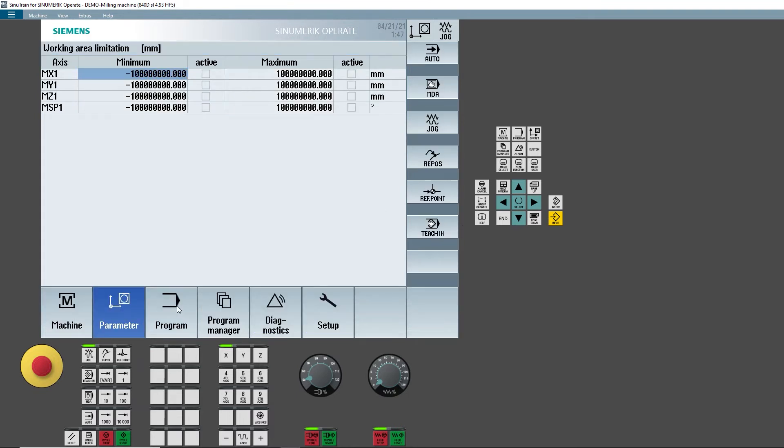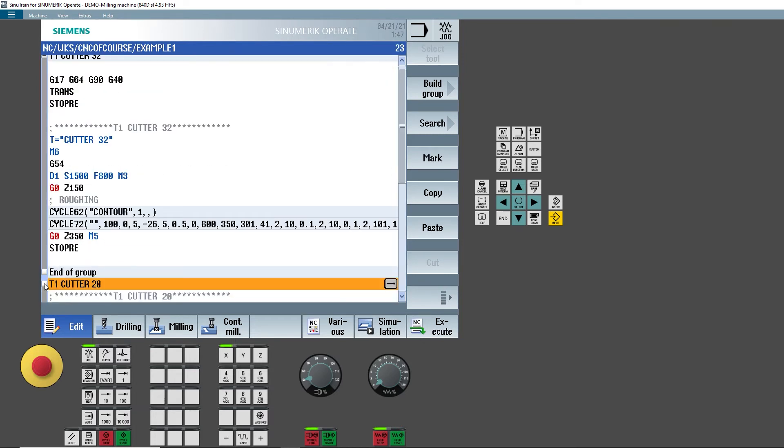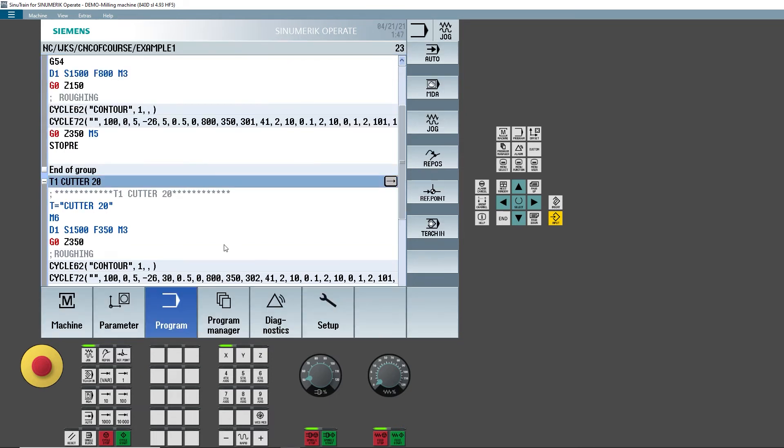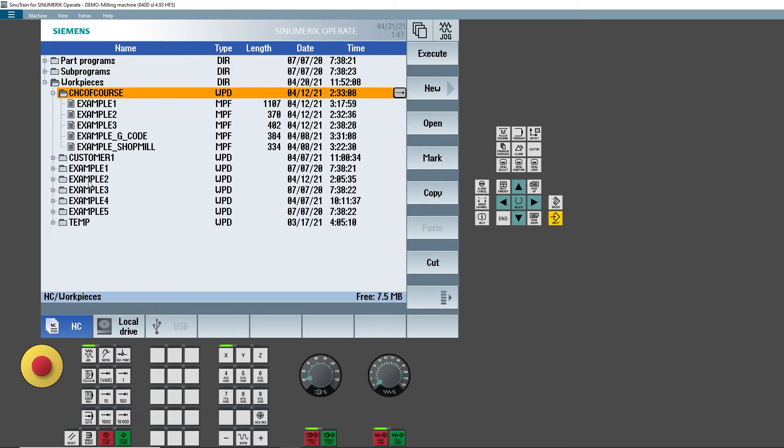Clicking on the Program key shows the active program in editing, which is not necessarily the program selected to run automatically. The Program Manager softkey accesses the Program Management screen, where you can manage programs and folders in the NC memory, but also in other drives such as hard disk, USB or network drives. Here, new programs are created, moved or copied, or even selected for execution.